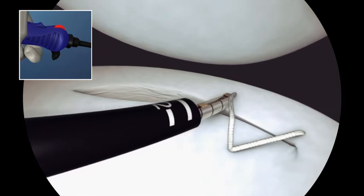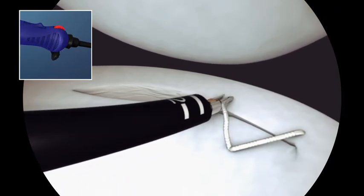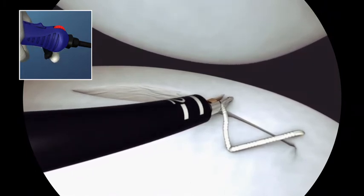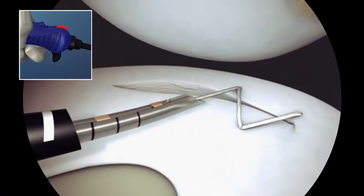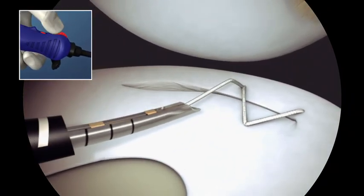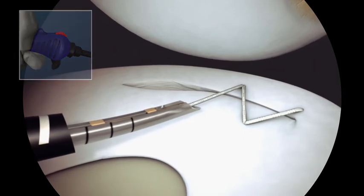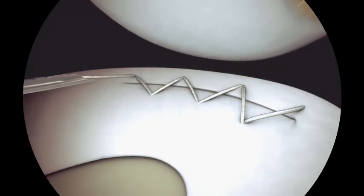Pierce the meniscus. Rotate the device twice. Advance the trigger to reset. Pull and release the trigger to deploy an implant. Withdraw the needle from the meniscus and tension the stitch. Continue creating sequential stitches until the meniscal running repair is complete.